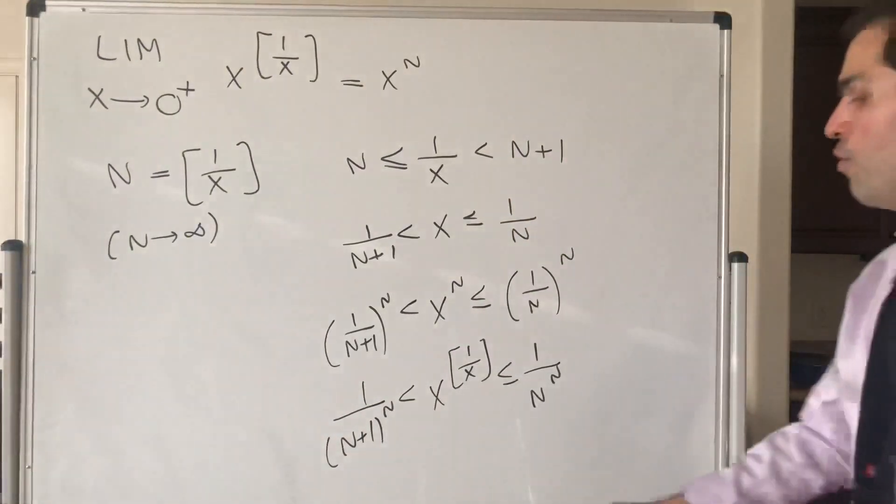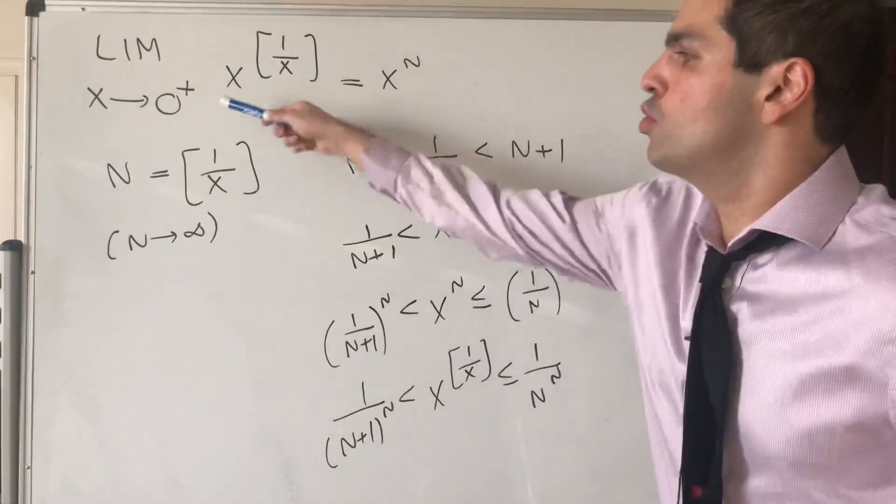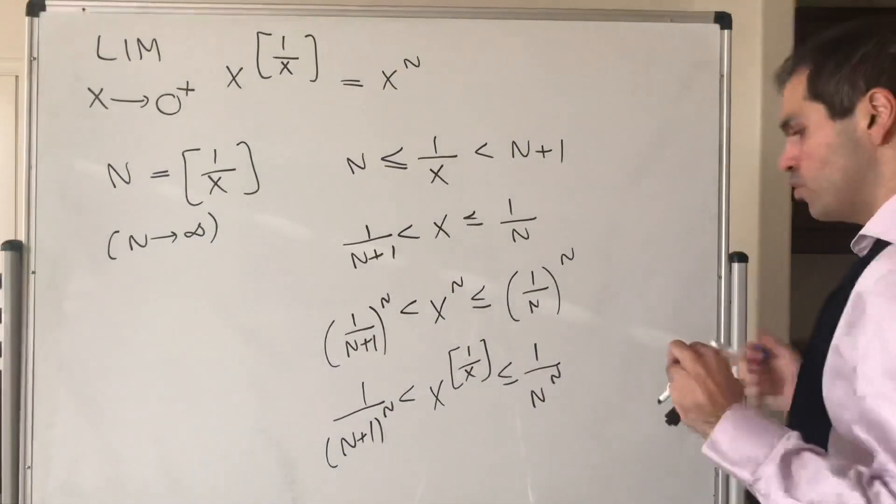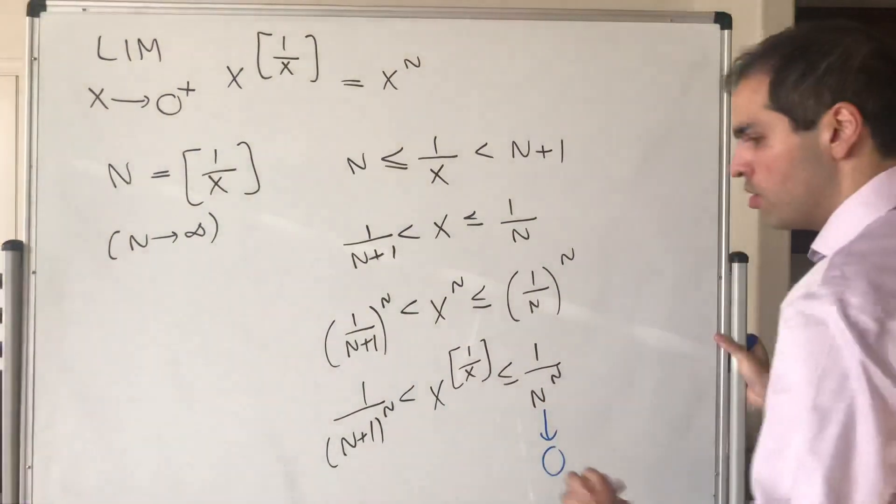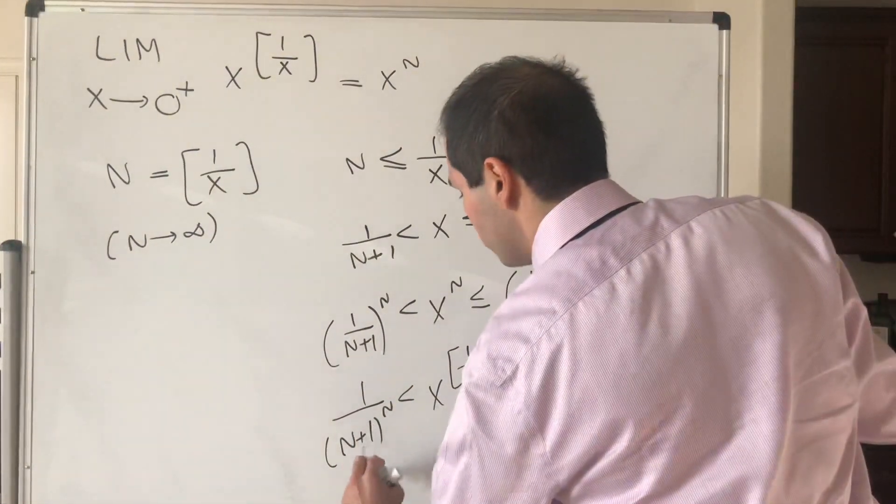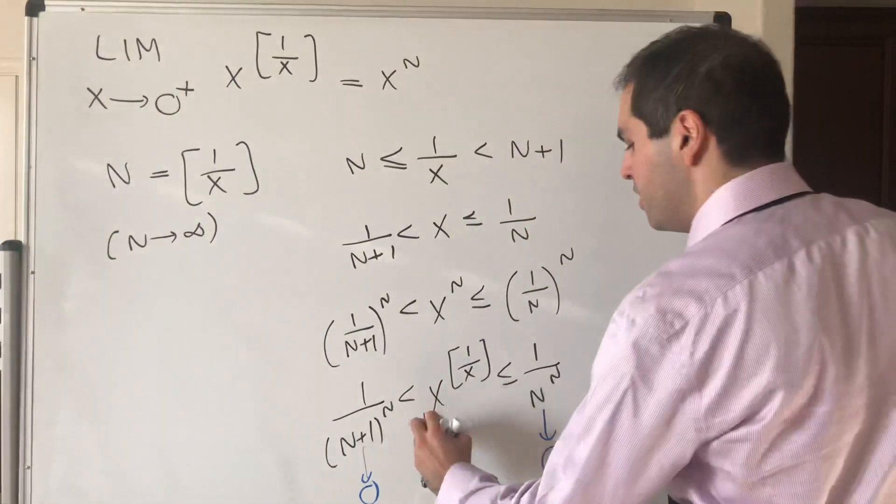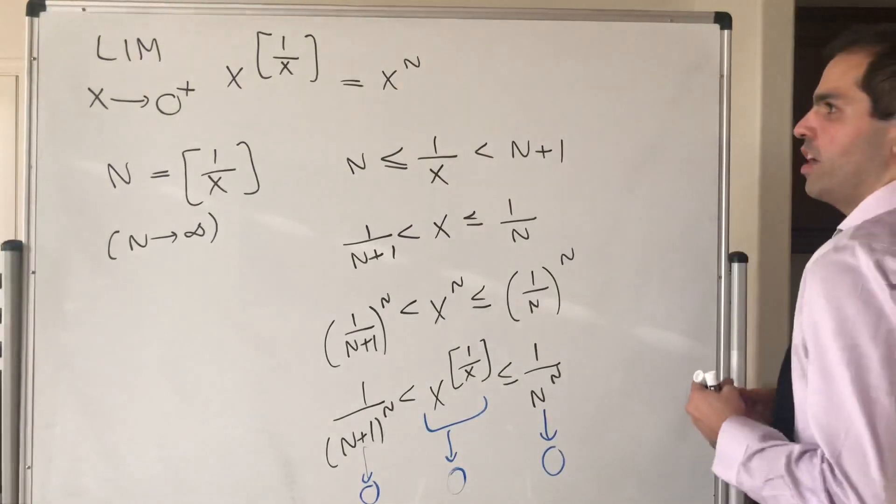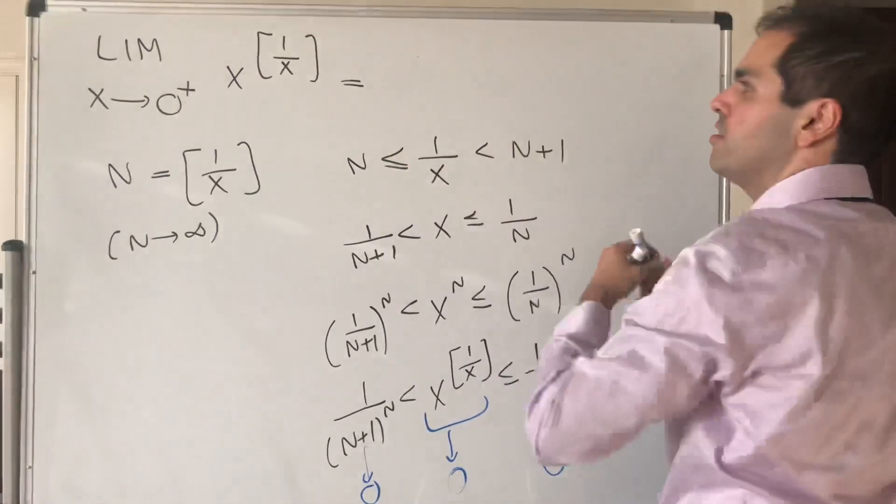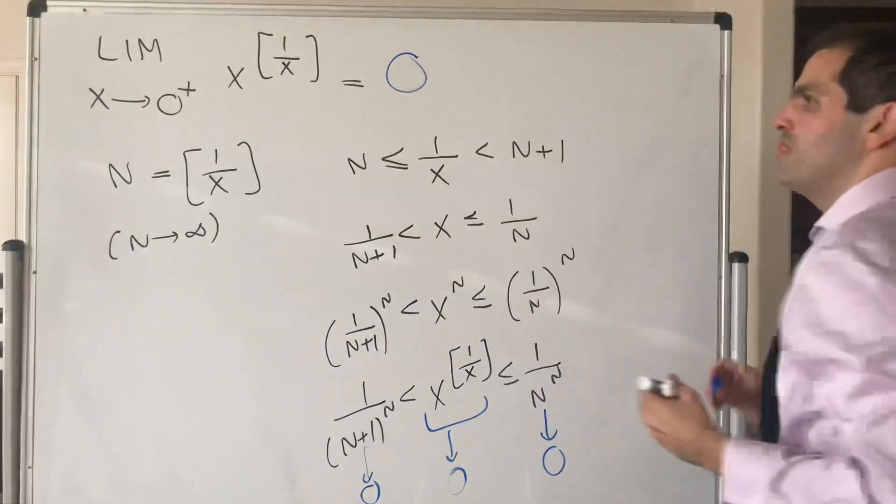But now remember, as x goes to 0 plus, n goes to infinity, so this goes to 0 because it's 1 over infinity. This also goes to 0 because it's 1 over infinity. So by the squeeze theorem, this goes to 0 as well. So in the end, what is the limit? The limit is simply 0.